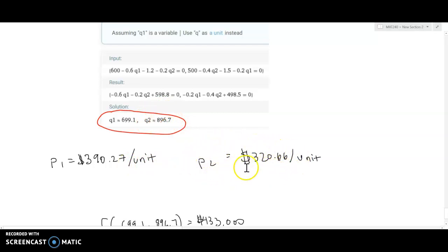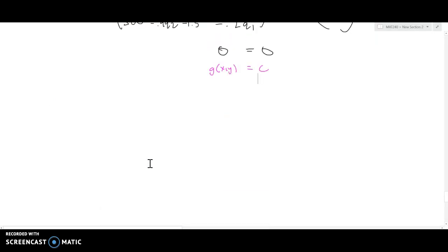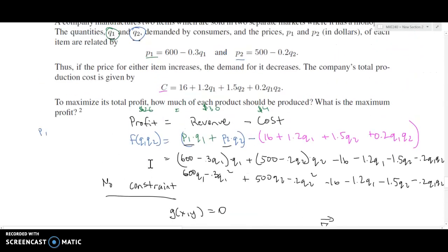When we take these two quantities and plug them into our profit equation, which is this guy down here, if we substitute in q1 and q2 into this expression, we are going to get our maximum profit.